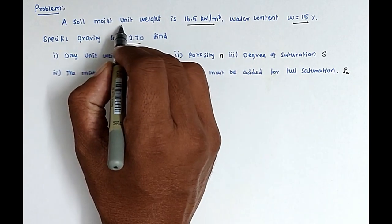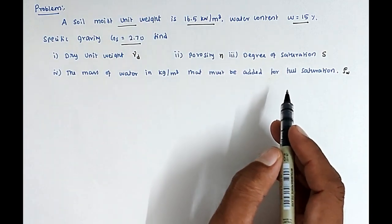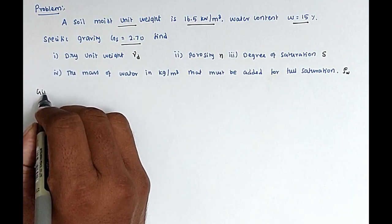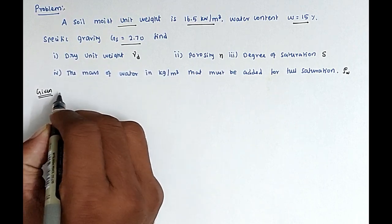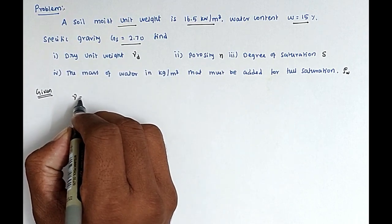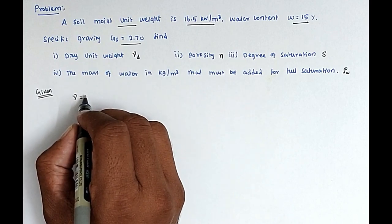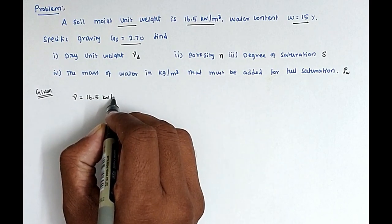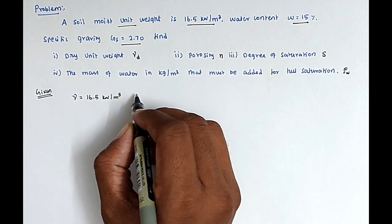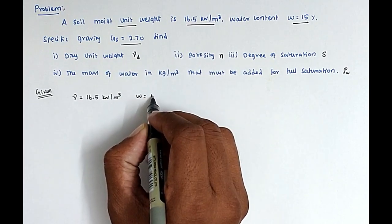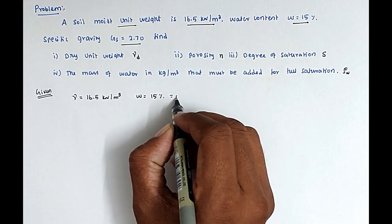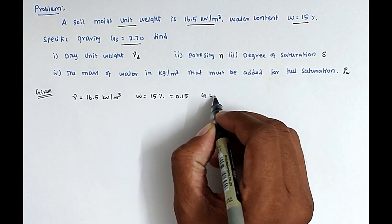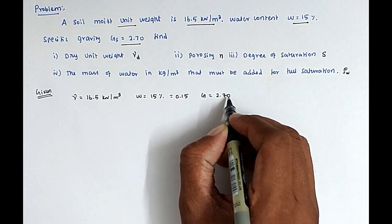So this is the moist unit weight, so we can convert into the fully saturated soil. The given values are: bulk unit weight γ = 16.5 kN/m³, water content W = 15% that is 0.15, and specific gravity G = 2.70.